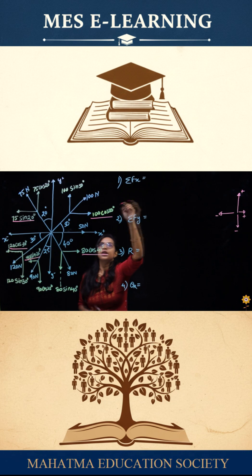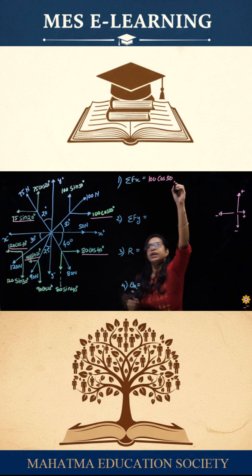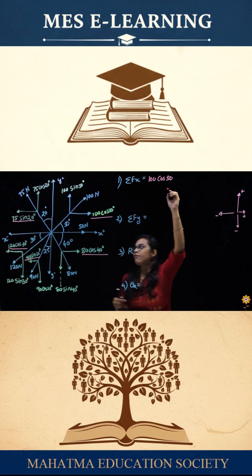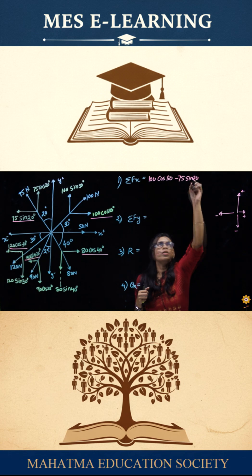So for f of x, this is going in the forward direction, so this would be 100 cos 50, positive. Next is this force going in the backward direction, so that is minus 75 sine 20. This force is also going backwards, so it would be minus 120 cos 30.